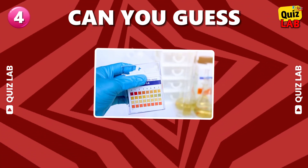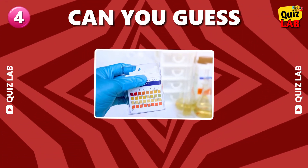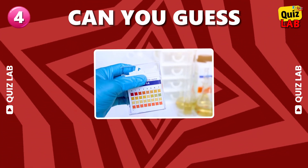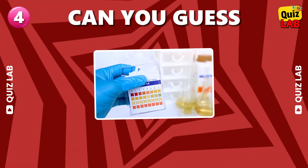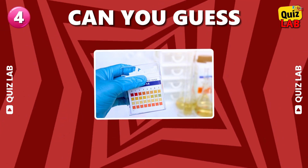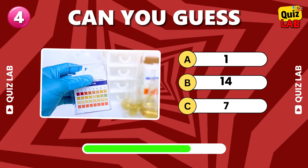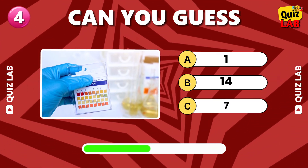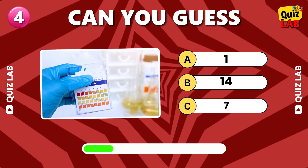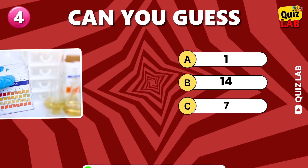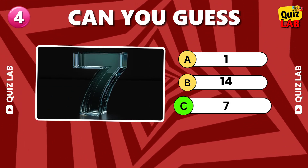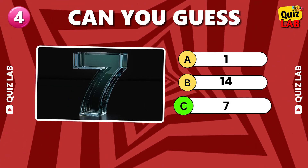What is the pH value of a neutral substance like pure water? Seven.